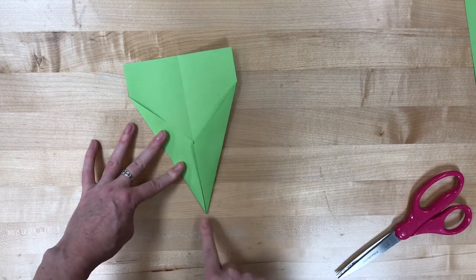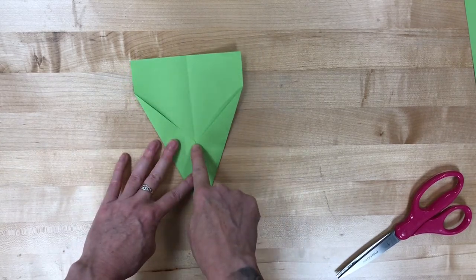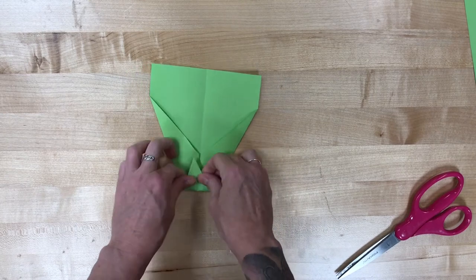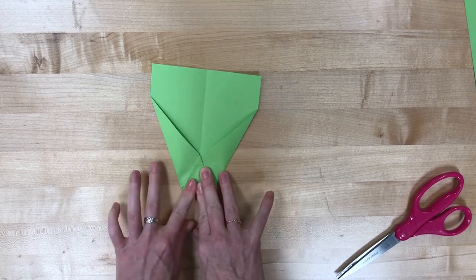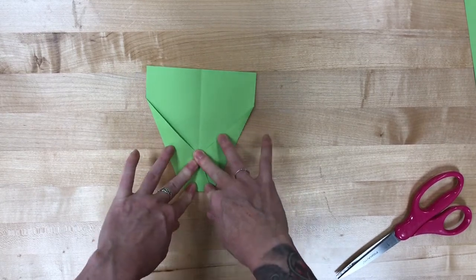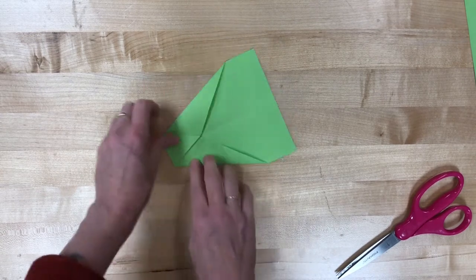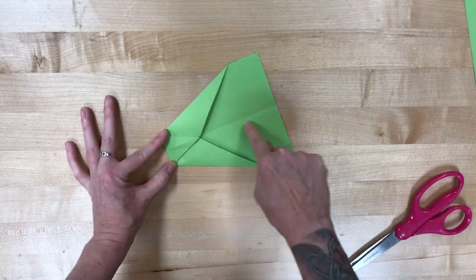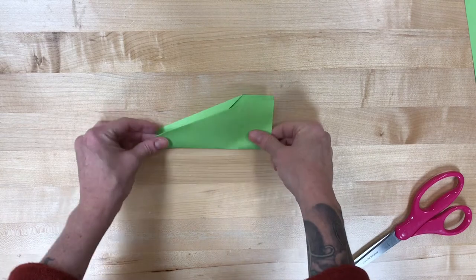Now I'm going to take the point that's at the very bottom, and I'm going to fold it up to those diagonal lines.